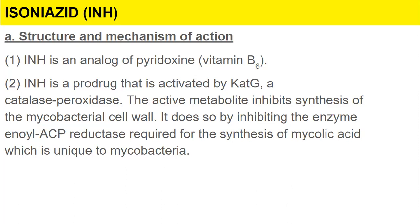The first drug to discuss is isoniazid, which is an analog of pyridoxine — vitamin B6. Isoniazid is a prodrug activated by catalase-peroxidase (catG). The active metabolite inhibits synthesis of the mycobacterial cell wall by inhibiting the enzyme InhA (enoyl-ACP reductase), which is required for the synthesis of mycolic acid — a component unique to mycobacteria.